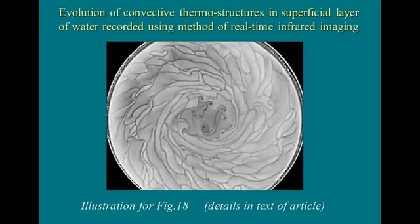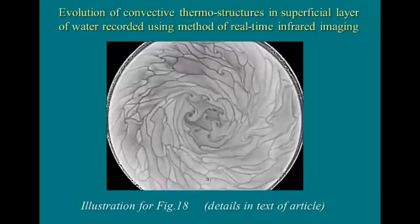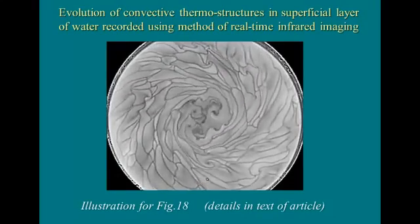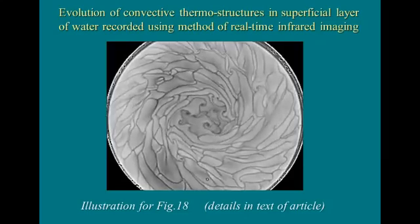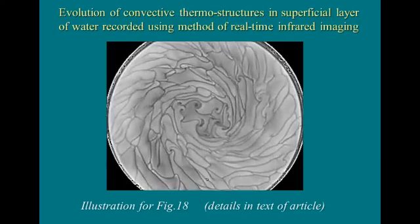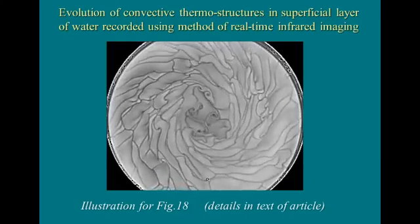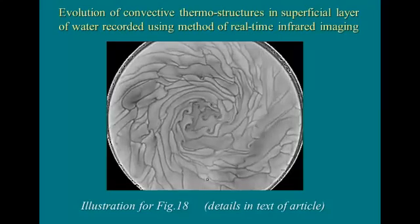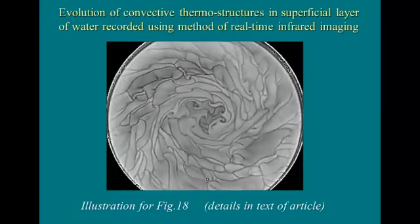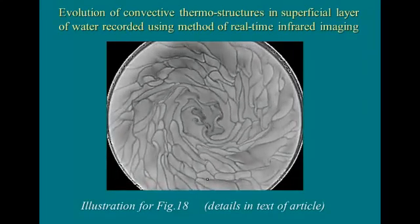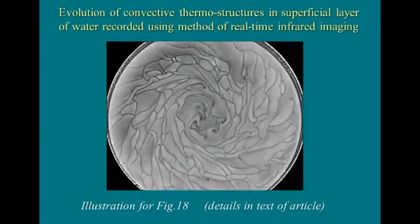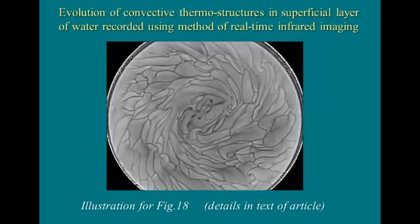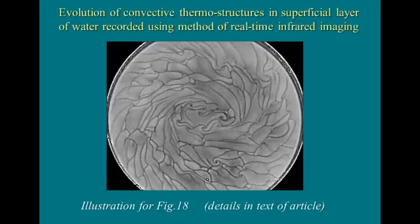Room temperature is 21 degrees centigrade, relative humidity 44%. The observed thermostructures are invisible in the visual spectral range, and the mechanism of their formation is associated with the temperature gradient which appears due to evaporation of water from the surface.